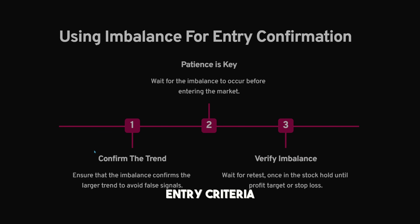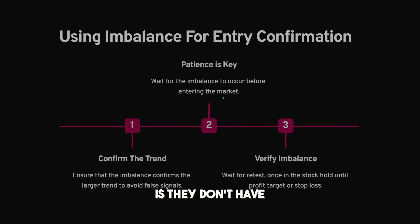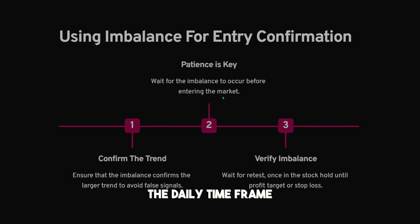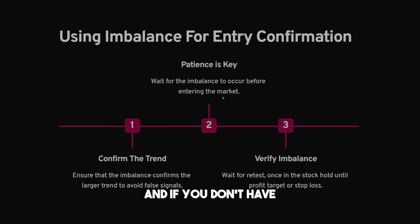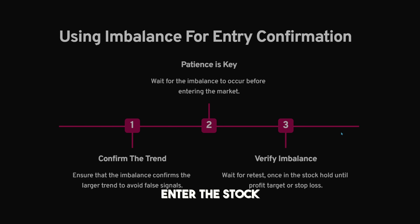So how can we use imbalance for entry criteria? Three steps again. Number one: confirm the trend — ensure the imbalance confirms the larger trend to avoid false signals. Number two: patience is key — wait for the imbalance to occur before entering. Many students try imbalance trading but don't have the patience to wait for the setup, which can take hours to days depending on the time frame. If you don't have the patience to wait for your setup, you will be losing more trades. Number three: verify the imbalance by waiting for a retest, then once you enter hold until your profit target or stop loss — do not exit before that.